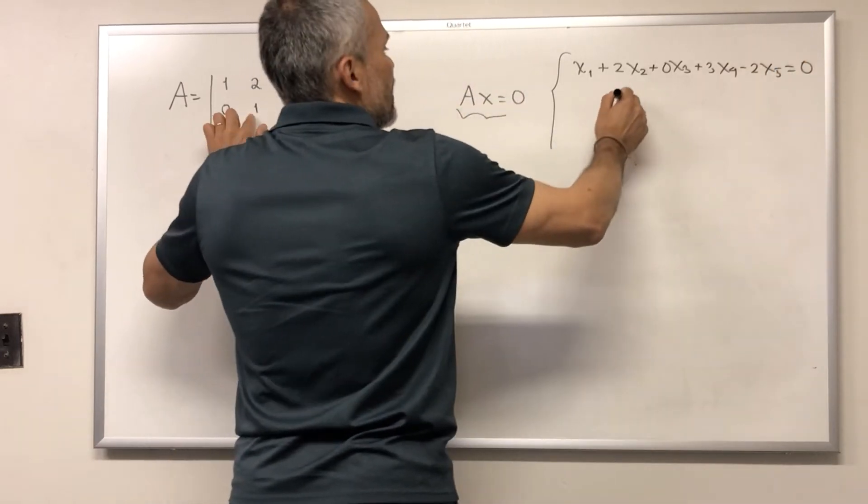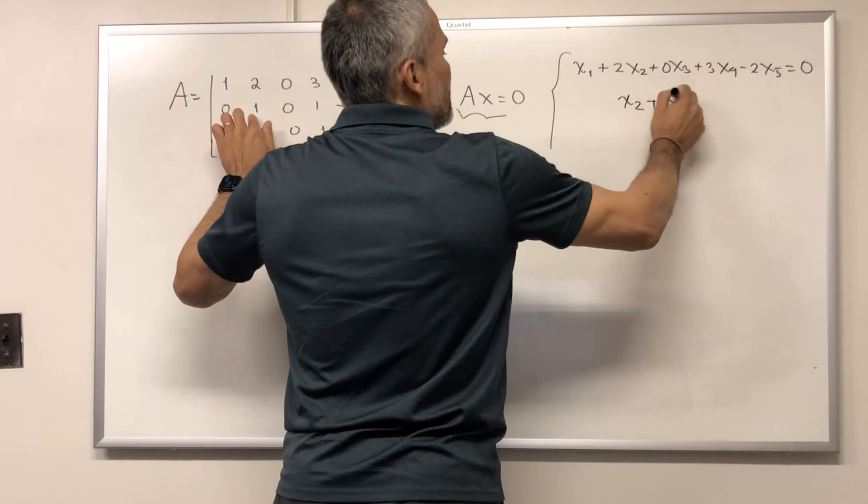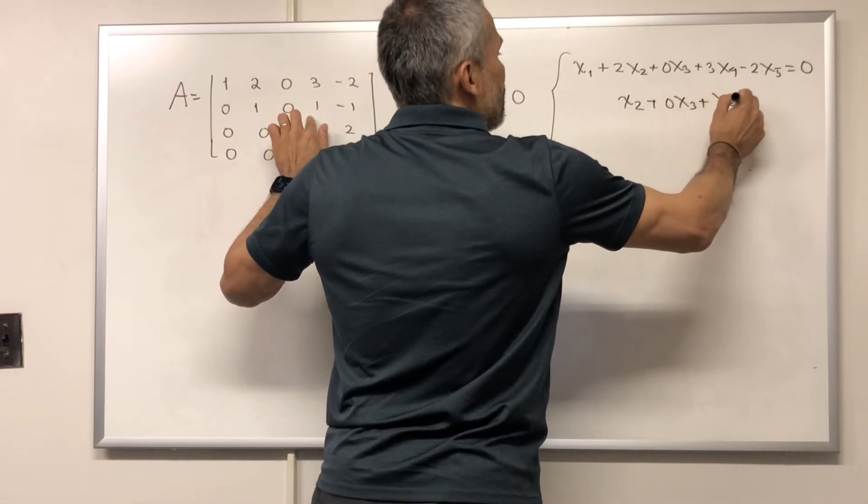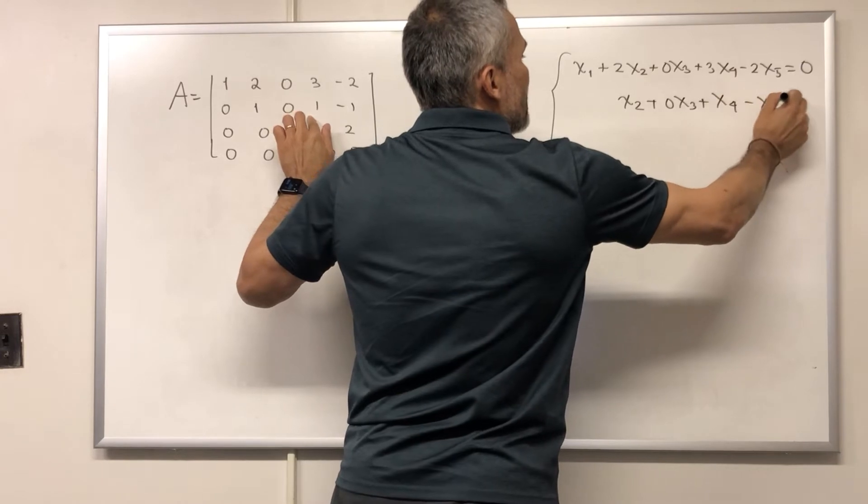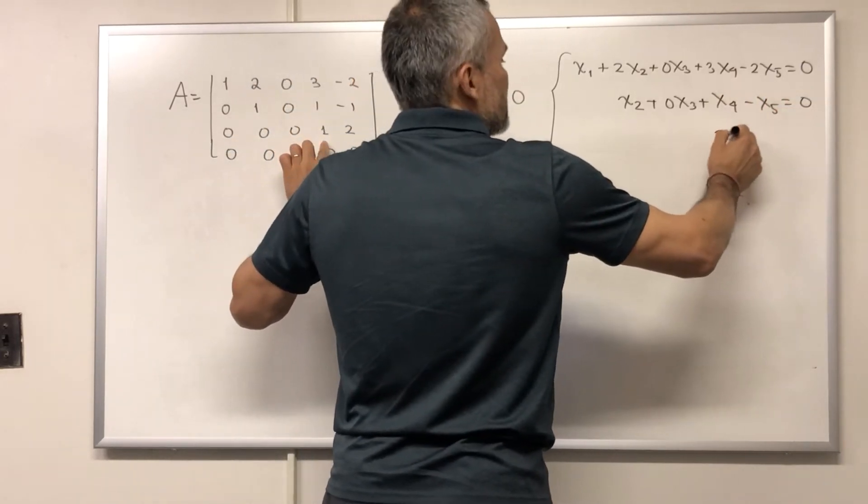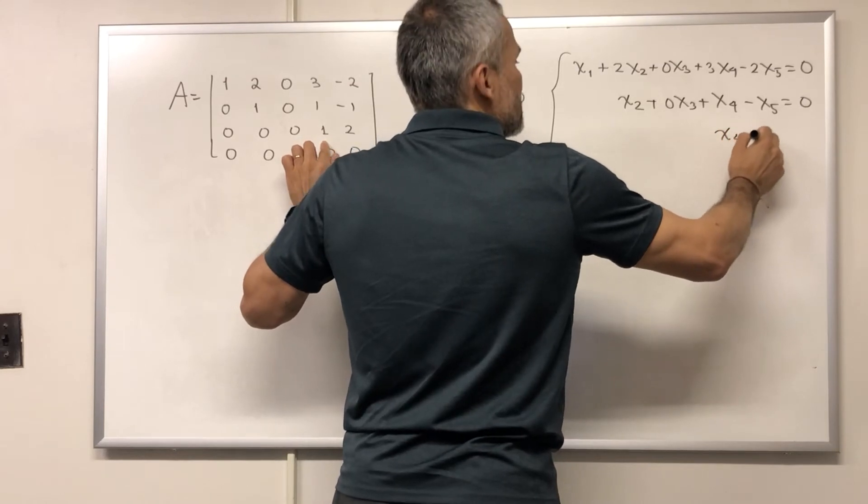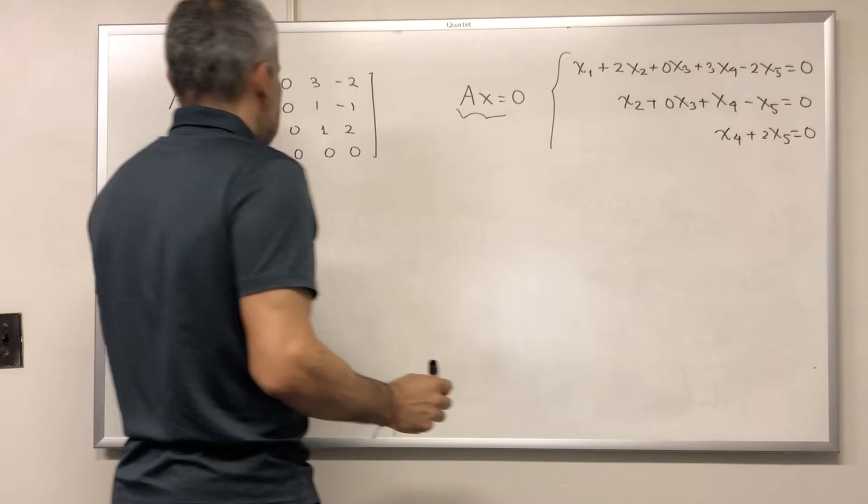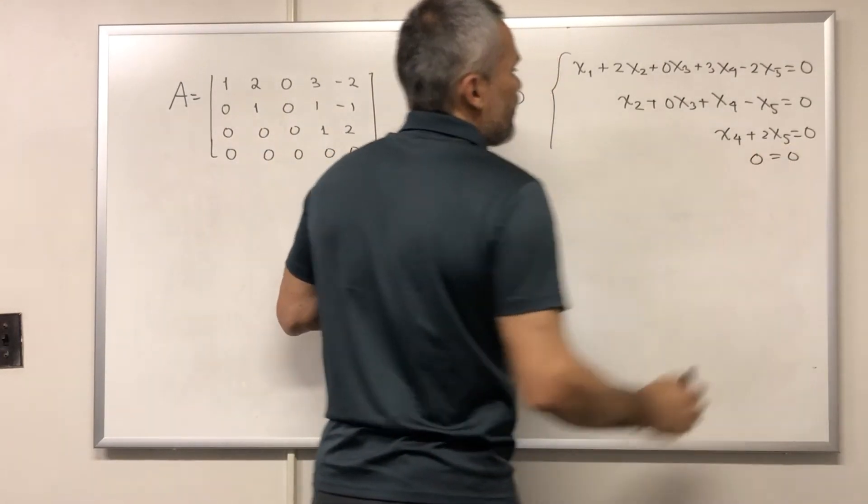X2 plus 0X3 plus X4 minus X5 equals 0. And here we have X4 plus 2X5 equals 0. And this is just the equation 0 equals 0.